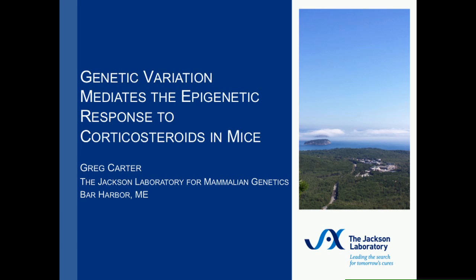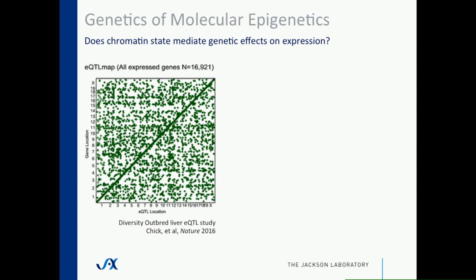This is work in a big collaborative group done at the Jackson Lab. I'm starting with an EQTL study that Gary Churchill and Steve Munger both talked about yesterday, where they mapped EQTLs in livers in diversity outbred mice. This is an eight-way outbred cross, and these are their results from a recent publication. You can see both cis and trans acting EQTLs, quite a few of them.